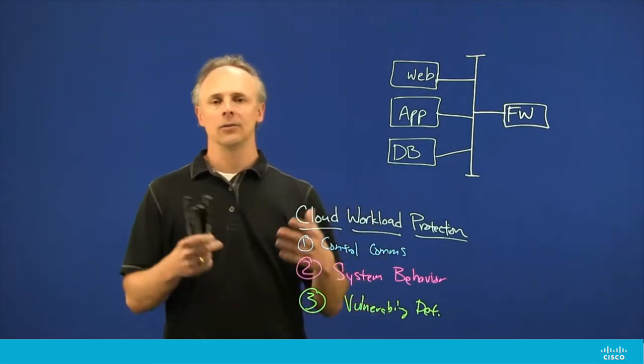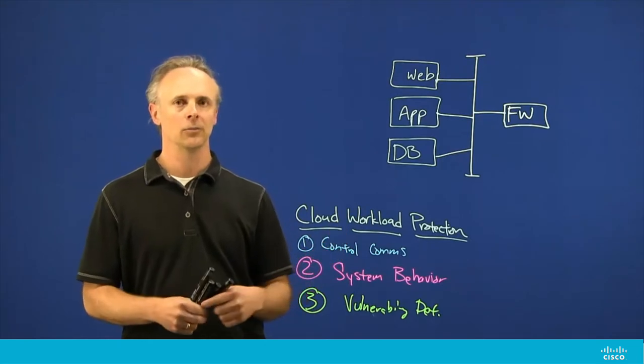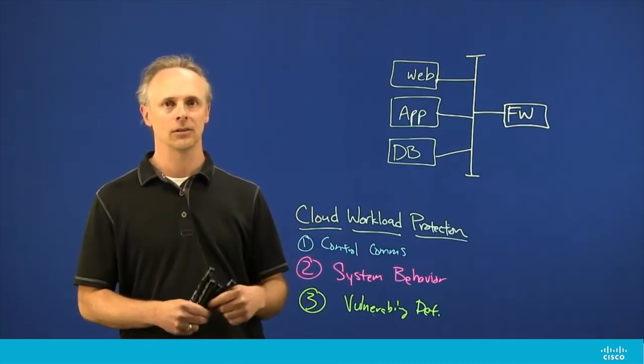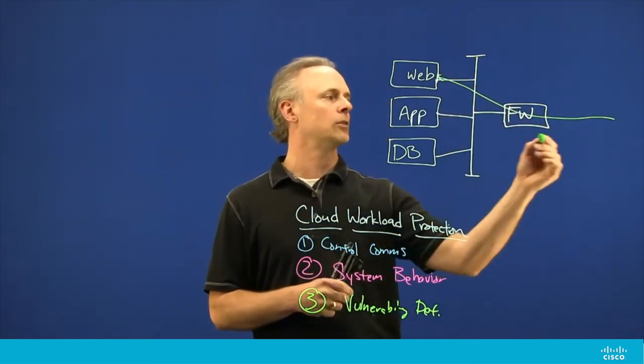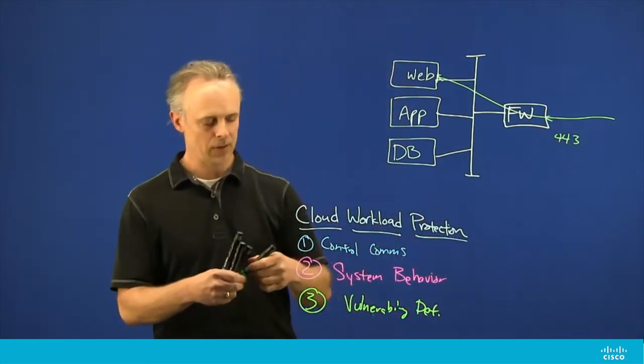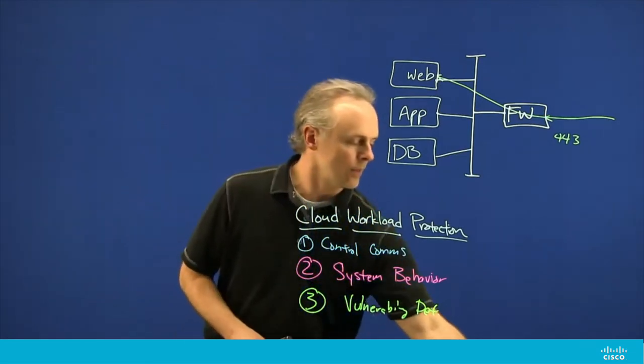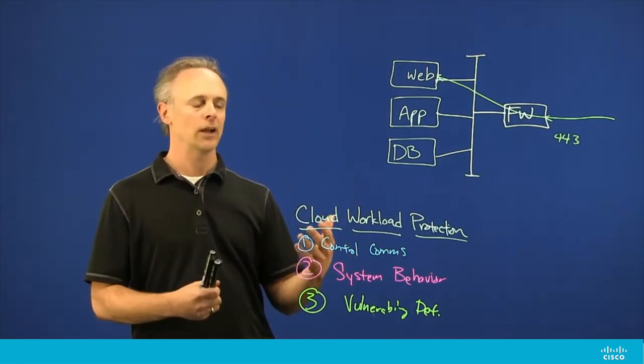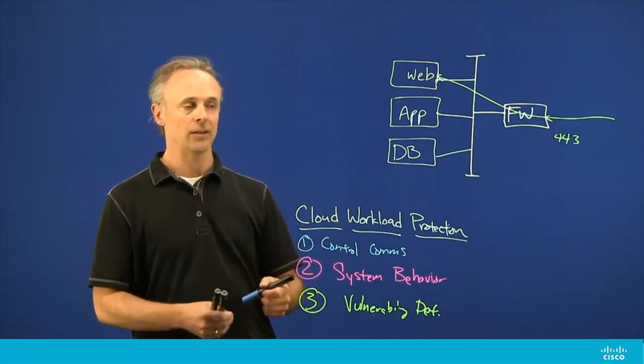If we look at an attack that happened not too long ago that was widely reported in the press, it used a vulnerability in the Apache Struts code framework where someone out on the internet would connect to a web server on an allowed port TCP 443 or port 80, in this case I believe it was 443, where they get access to the code running on that web server and execute the vulnerability of the Apache Struts code.